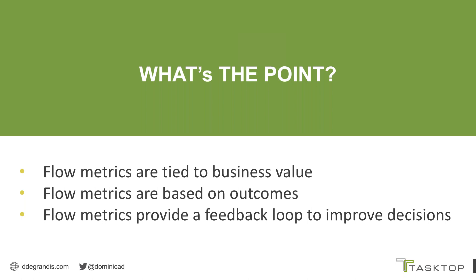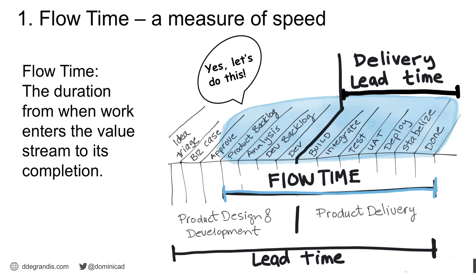Flow metrics use language that both IT and business people can understand, like time — when can a big customer use this feature? That's a speed question, which brings us to our first metric: flow time. Flow time is a measure of speed — it's the elapsed time from when work enters the value stream to when it's considered done. That time frame might differ depending on the team: one team might consider something done when delivered to the customer, another not until months later to determine if value was derived.